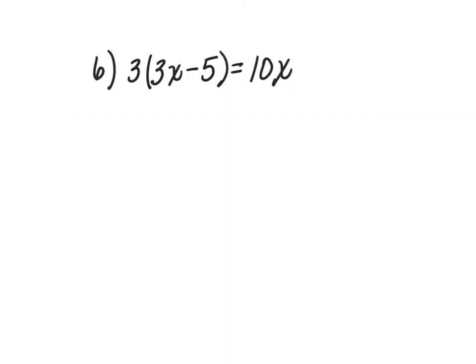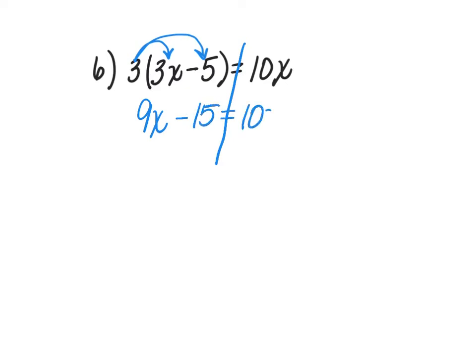Number 6 is 3 times the quantity 3x minus 5 is equal to 10x. In this particular problem, I need to get rid of the parentheses on the left side by distributing. So 3 times 3x is 9x, and 3 times negative 5 is negative 15. There's nothing to do on the right side, so I'm going to bring down that 10x.